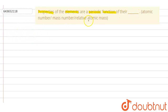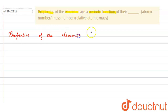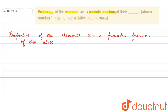The answer of this question is atomic number. Properties of the elements are a periodic function of their atomic number. Now, there is a reason behind this — how properties of elements are a periodic function of their atomic number.